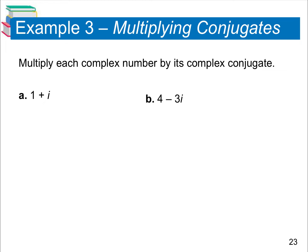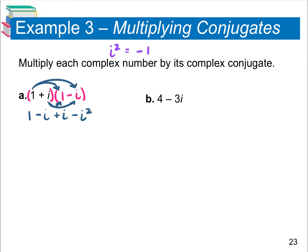With example a, we have 1 plus i. We're going to put parentheses around that and multiply it by 1 minus i, so that way we have the conjugate of it. From here, we just foil it out. So 1 times 1 is 1. The 1 times negative i is negative i. i times 1 is positive i. And i times negative i is negative i squared. We said in part 1 that i squared is equal to negative 1, so this negative i squared is going to turn into a minus negative 1.